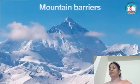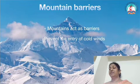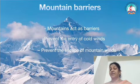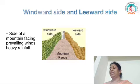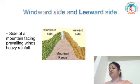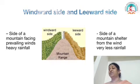Next is mountain barriers. Mountains affect climate a lot — they act as a barrier for blowing winds, sometimes preventing the entry of cold winds into a country. The windward side is the side of a mountain that faces the prevailing wind; this side receives heavy rainfall and is always very green. The leeward side is the other side, sheltered from the wind — it is the drier side and receives very low rainfall.